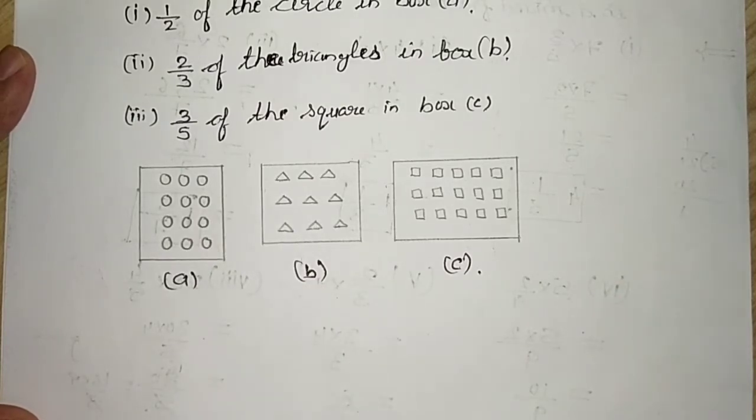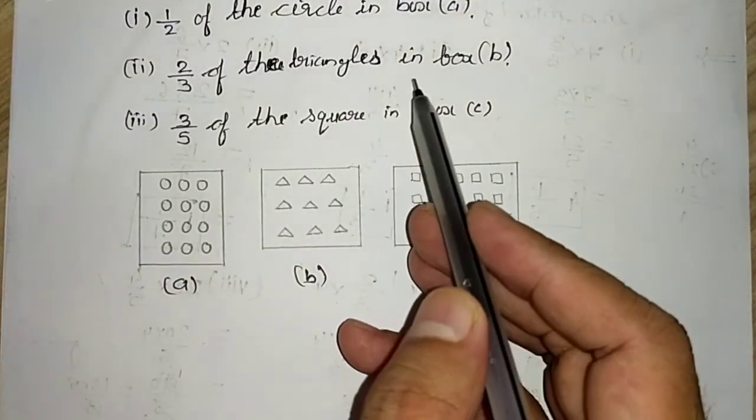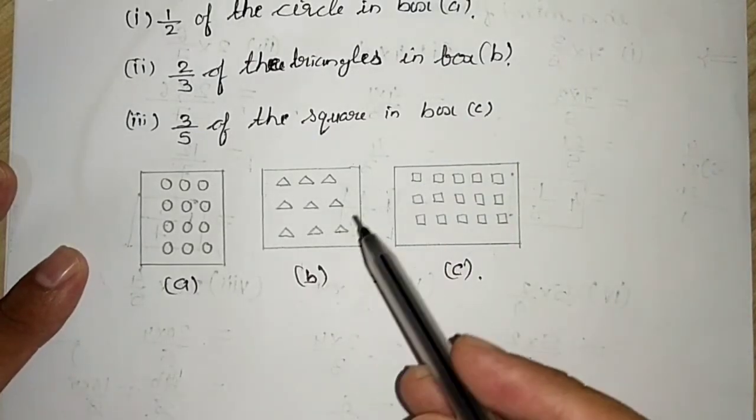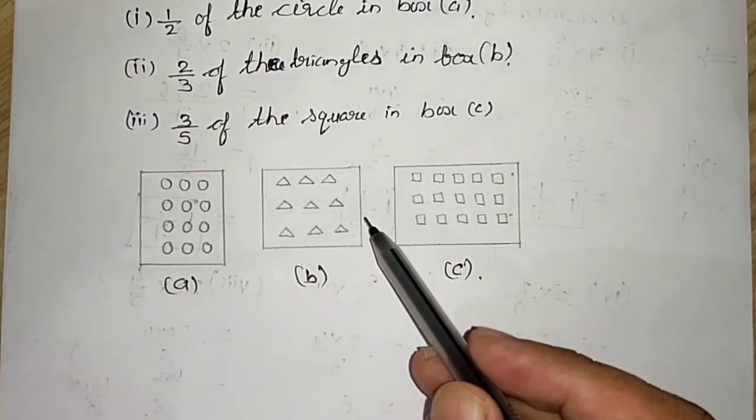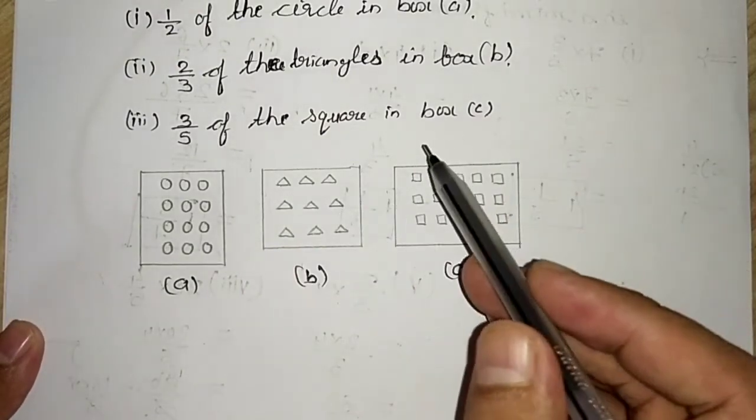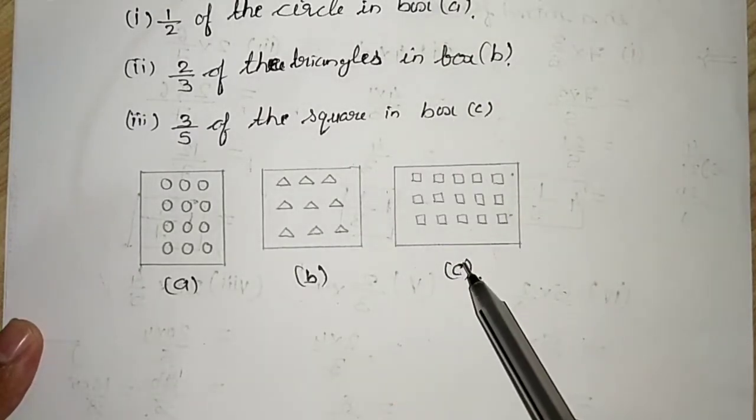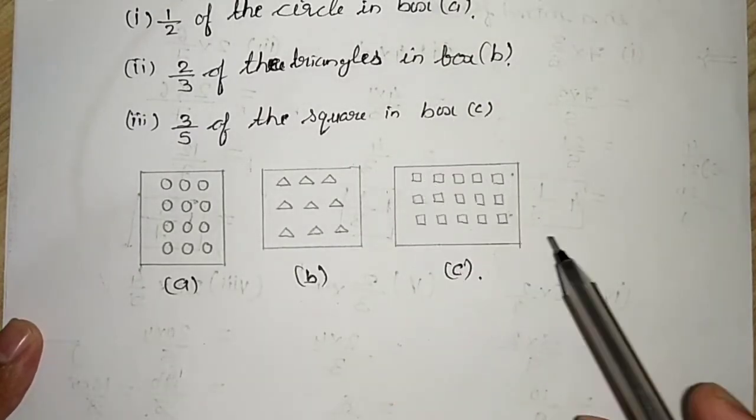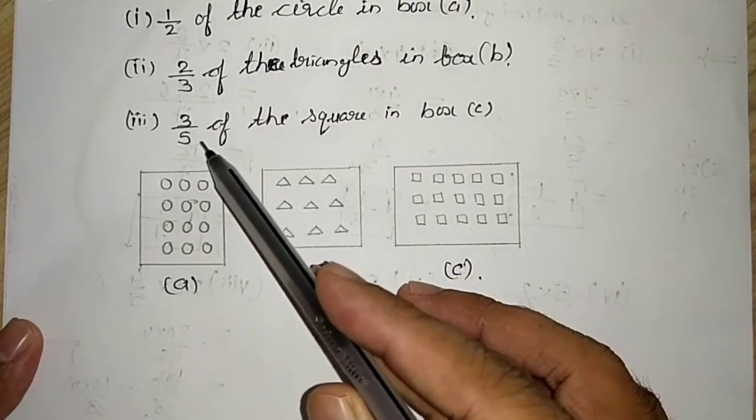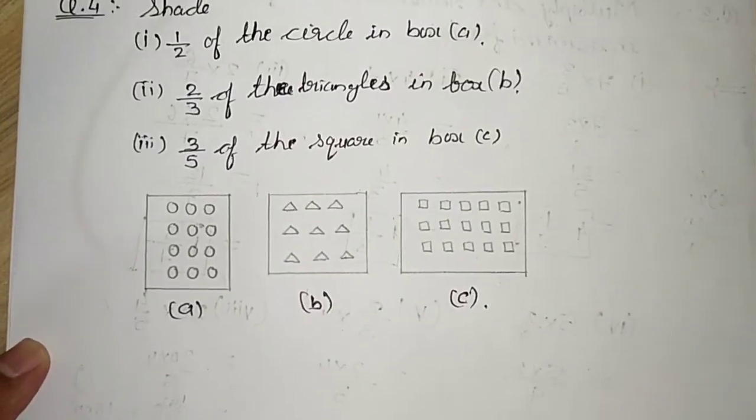Second question: 2 by 3 of the triangles in box B. The triangles given in the box B, you have to shade 2 by 3 of that triangles. And 3 by 5 of the square in box C. In box C there are squares, you have to shade 3 by 5 of the squares in this box C. So let us solve one by one.